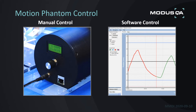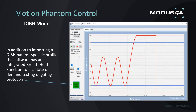Just to go over it again: the PBrest family has the ability for manual operation at the motor and via software, whereas the MRI 4D Phantom only has control with our software. A software feature I'd like to focus on before the demonstration is our Deep Inspiration Breath-Hold mode.